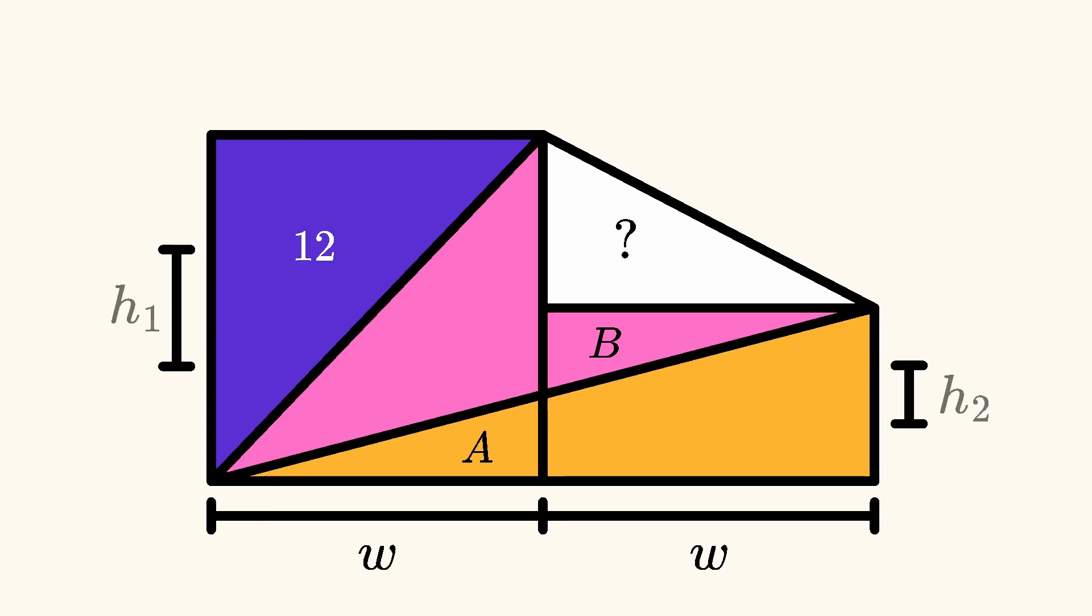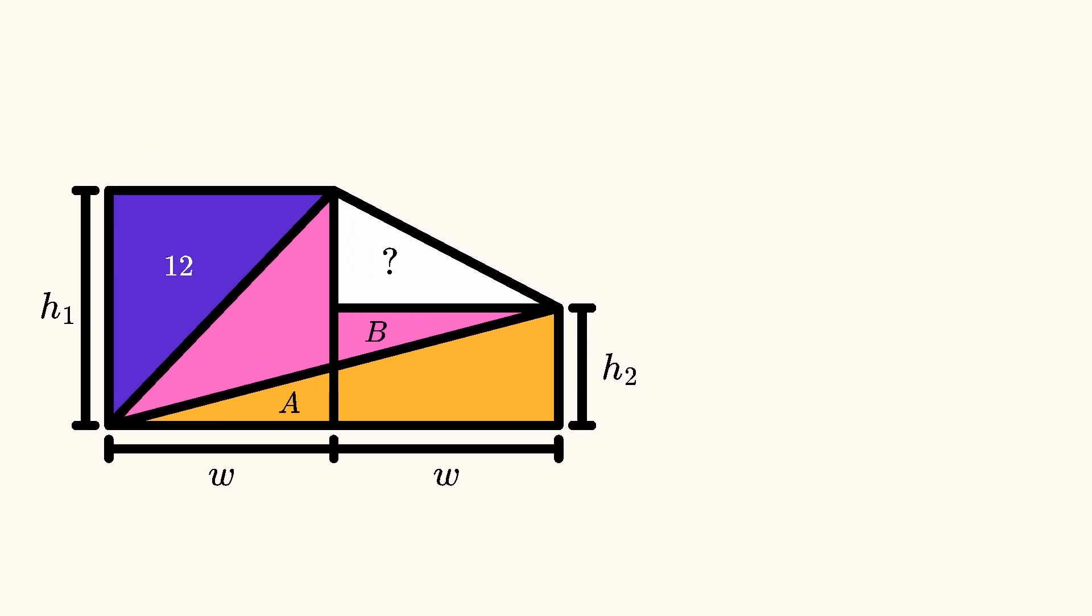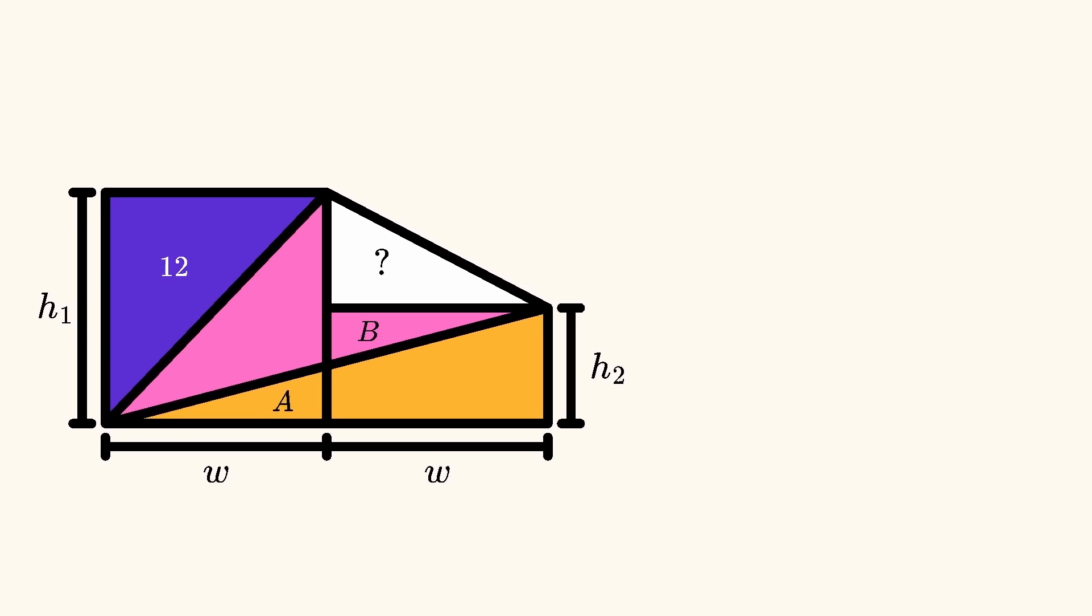Now let's let the heights of the left and right rectangles be H1 and H2, respectively. Since the purple and orange areas are equal, we have that 1 half times W times H1 is equal to 1 half times 2W times H2, which simplifies to H1 is equal to 2 times H2.